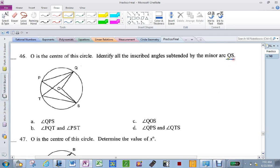Q S goes right there. I need all the angles from Q S. There's 1, Q P S. There's 2, Q T S.